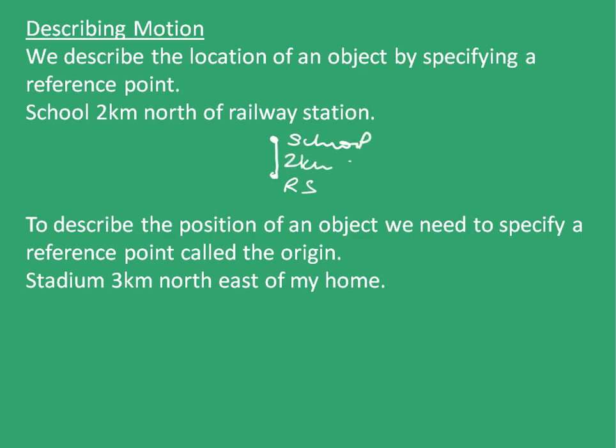Similarly, to describe the position of an object, we need to specify a reference point called origin. Stadium is three kilometers northeast of my house. Here, my house will be the origin and the stadium will be three kilometers northeast of my house. This will be three kilometers in the northeast direction. This will be my home and this will be my stadium.